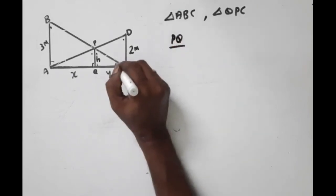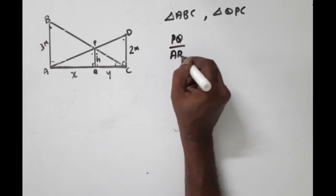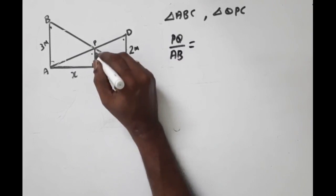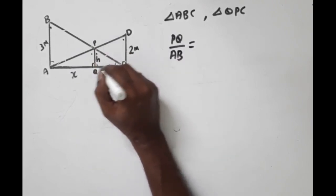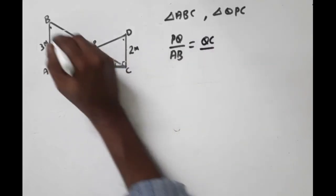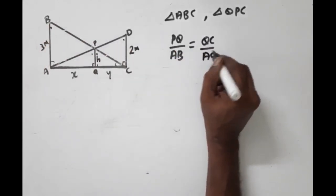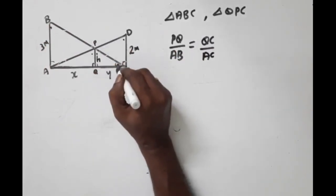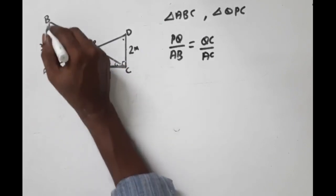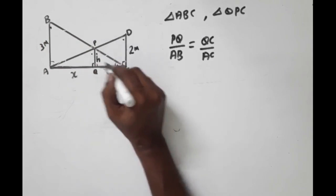By the similarity of the triangles, PQ by AB equals the opposite side QC by AC. Similarly, from the other triangle with the same common angle, AB equals QC by AC.